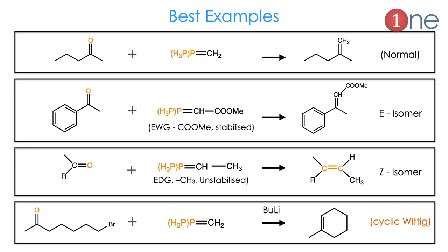Let us see the best examples. The first example is a carbonyl group reacting with a plain ylide to give a normal alkene. The second example involves a phenyl system, where the stabilized ylide — with an electron-withdrawing group attached to the ylide carbon — gives the E-isomer. Similarly, an electron-donating group like a methyl group, which destabilizes the ylide, forms the Z-isomer. The last example is very important: a cyclic product forms when the carbonyl and bromine are in the same molecule, so the ylide forms inside and produces a cyclic ring — this is called the intramolecular Wittig reaction.